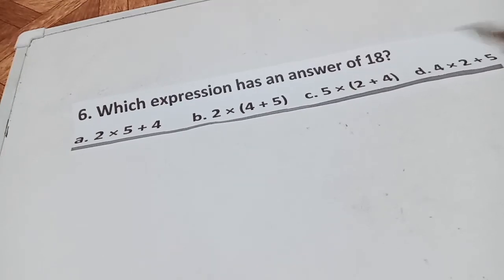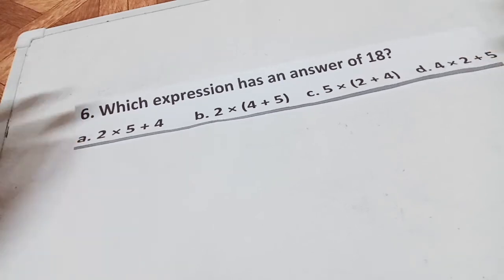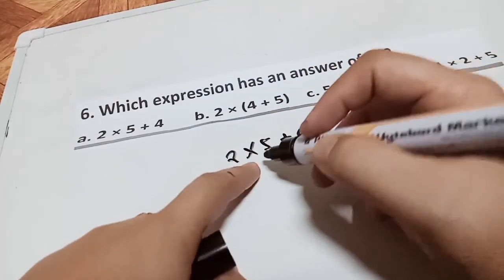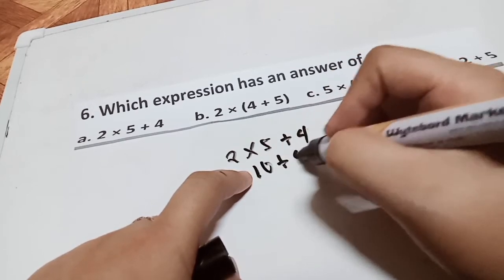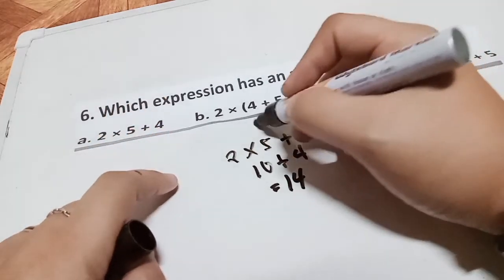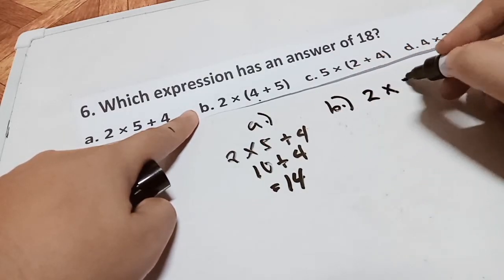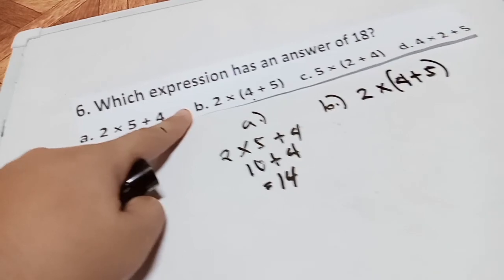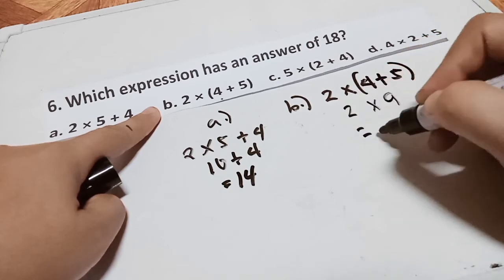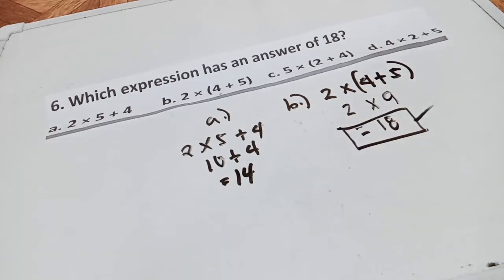Which expression has an answer of 18? Don't be confused this one. Let's try to have letter A: 2 times 5 plus 4. 2 times 5 is 10 plus 4 equals 14. This will not be the final answer. Letter B, we have 2 times (4 plus 5). There is a parenthesis. 4 plus 5 is 9 times 2. The answer is 18. Take note guys, the best answer is letter B.